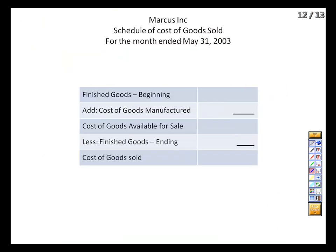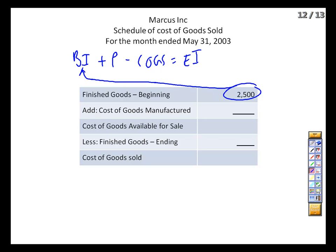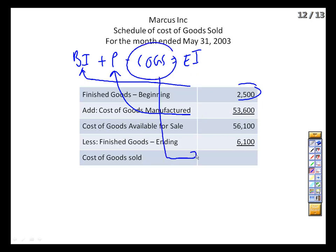That $53,600 is now used as purchases in our periodic accounting system journal entry. Then one more schedule — another iteration of beginning inventory plus purchases minus cost of goods sold equals ending inventory. We've got beginning finished goods inventory of $2,500, and we add the $53,600 transferred out of work in process into finished goods, giving us $56,100 of finished goods inventory available to sell. We count our finished goods warehouse and discover we've got $6,100 on hand — which means we must have sold $50,000 of inventory. We can do this either way — perpetual or periodic — and we'd still apply LIFO, FIFO, or average cost, but we don't need to get into that level of complexity here.